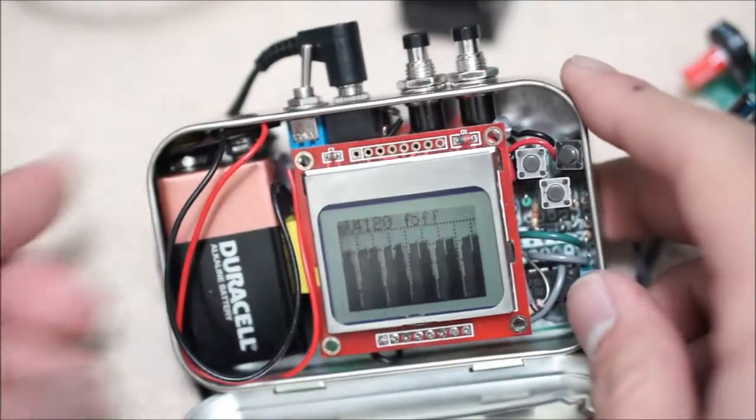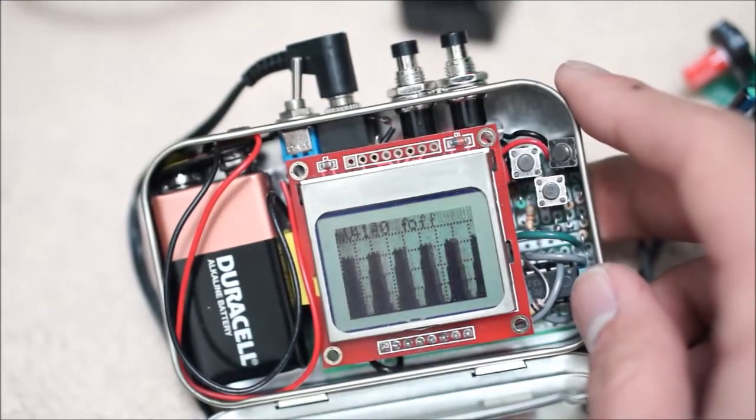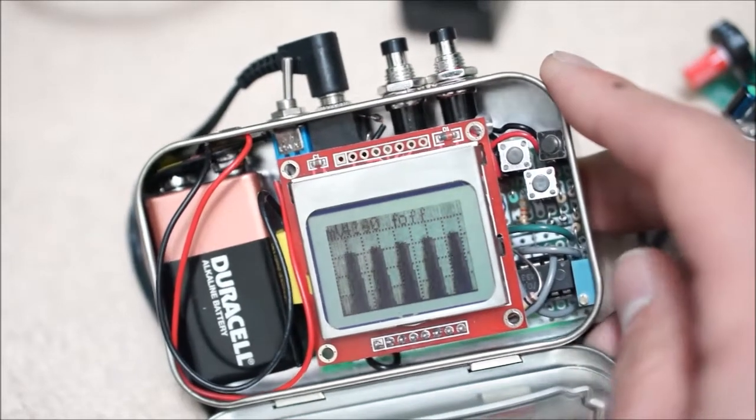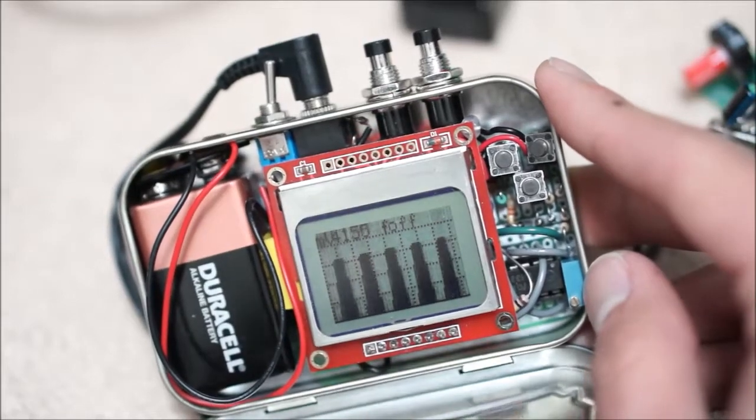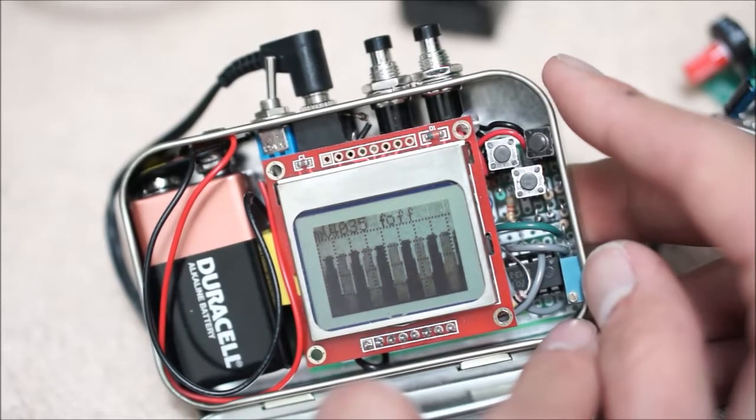Alright, so as you can see, on our Altoscope, that's what I'm calling it, we have a signal on display. And I forgot to mention earlier, but there's a trim pot in here, as you can see right there, really tiny. And this is used to adjust the trigger on the scope.